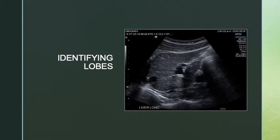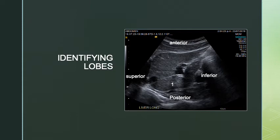Next, let's look at a longitudinal image of the left lobe of the liver, with superior, inferior, anterior, and posterior orientation. You can see the left portal vein, the ligamentum venosum, and the left hepatic vein. Here I have segment one — the caudate lobe — segment two, and segment three. Segment two is my superior lateral, and I can estimate that four A is separated from two by the left hepatic vein. Segment three is the inferior portion of that lateral lobe.